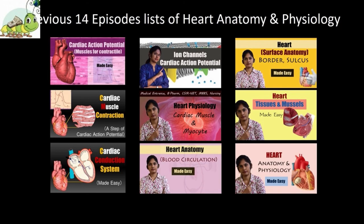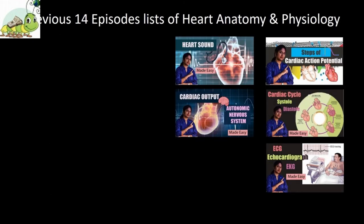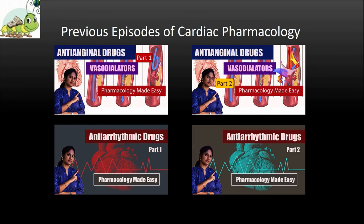So today we learned about several drugs which are commonly used as class 1 antiarrhythmic drugs to treat arrhythmias. I discussed some modern types of drugs also in pharmacological relevance. I will come in the next episode with class 2 type of antiarrhythmic drugs. Revise all episodes on the heart thoroughly — I made them step by step accordingly. All previous episodes on heart anatomy, physiology, and cardiac pharmacology are listed here, and you will get all links in the discussion part of this video or you can visit our channel.